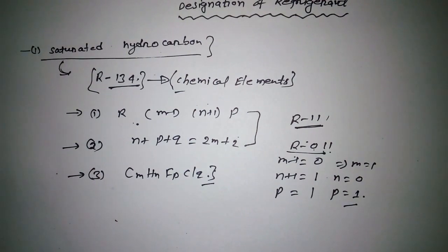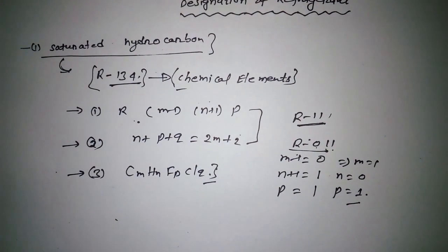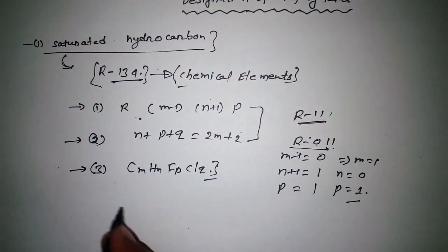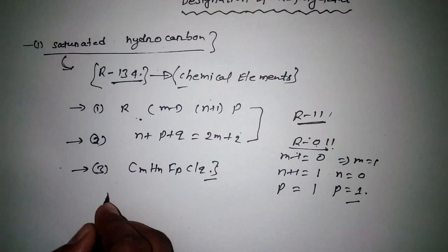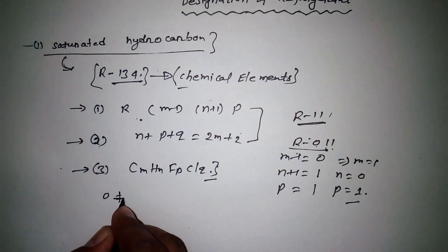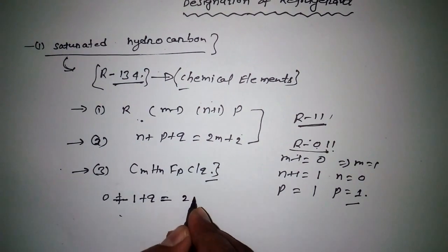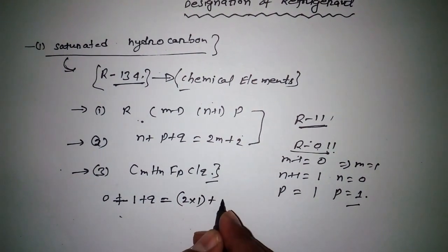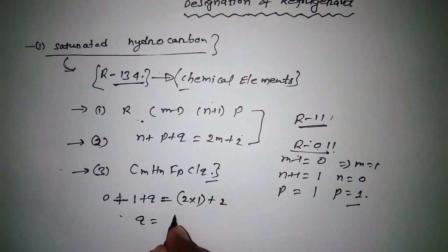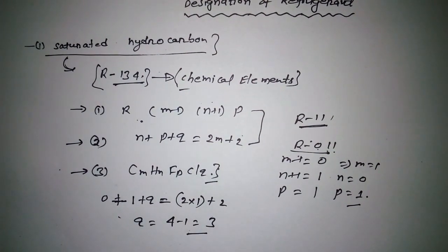So: n + p + q = 2m + 2. Substituting: 0 + 1 + q = 2(1) + 2. Therefore, q = 4 - 1 = 3.